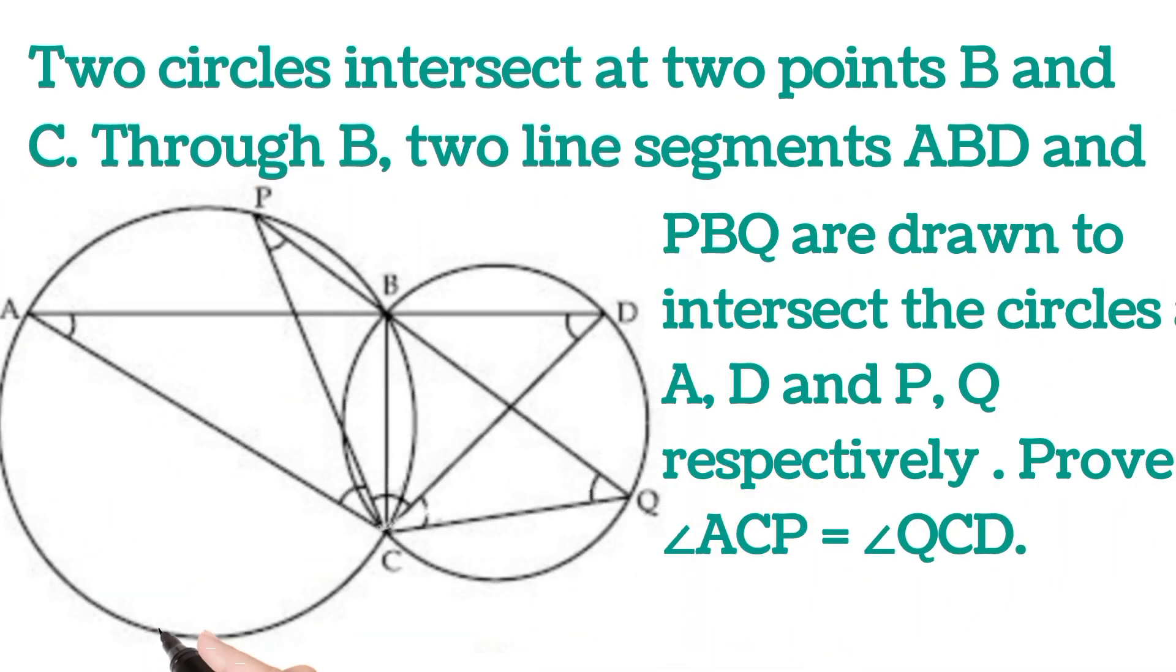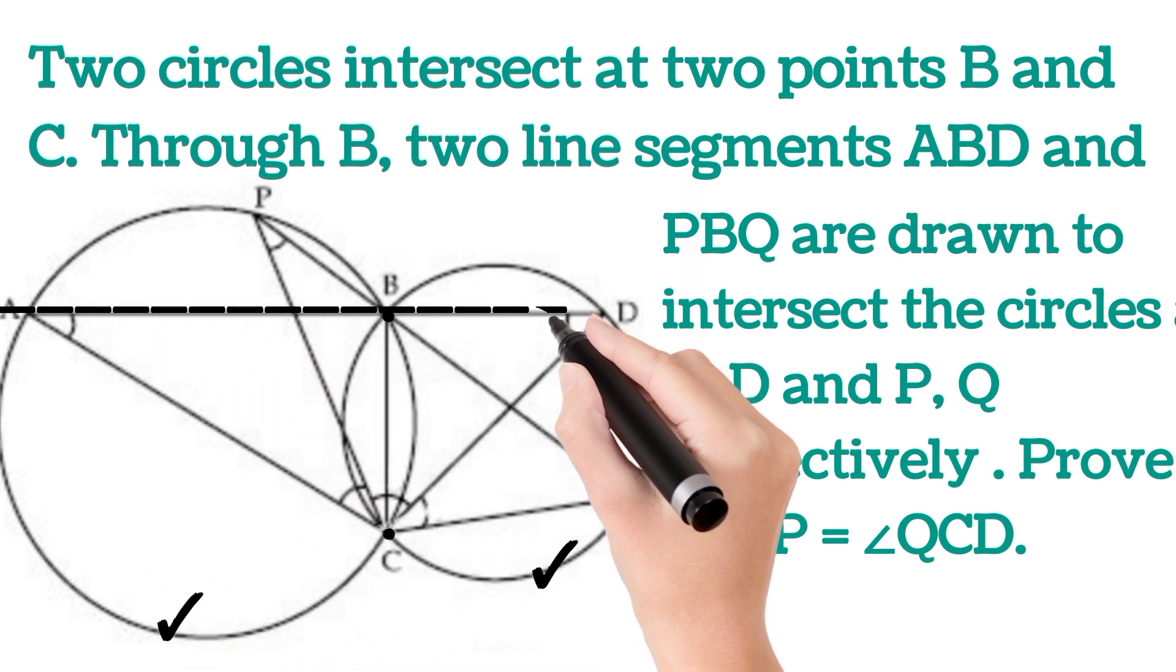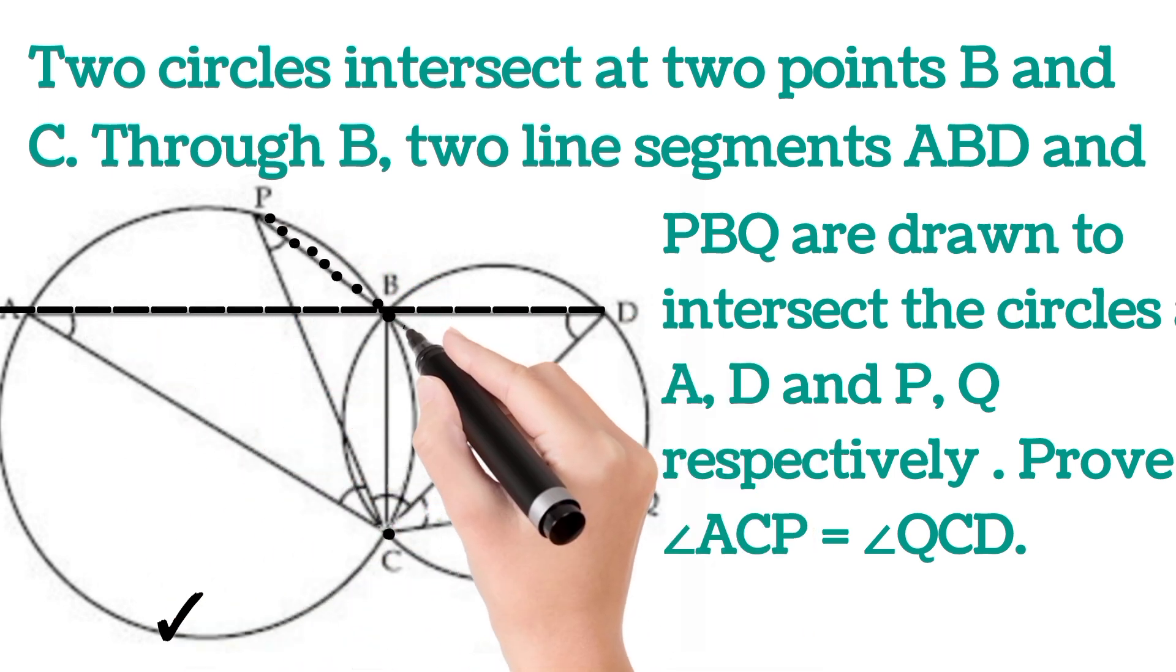Today's video is two circles are intersecting at point B and C. Through B, two lines ABD and PBQ are drawn.